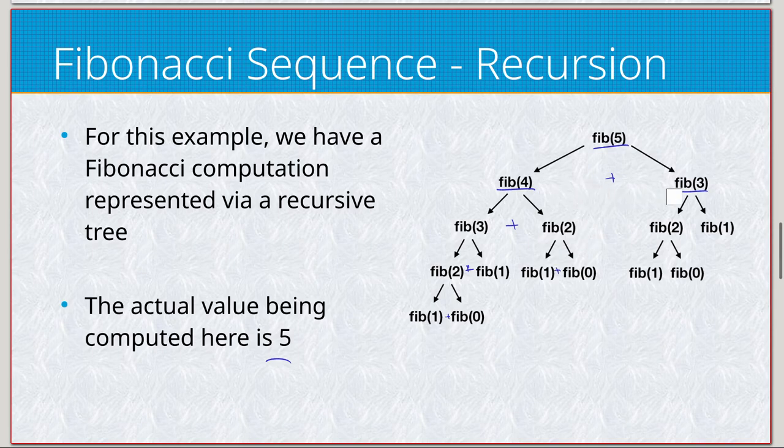But now we have to solve Fibonacci 2 and 3, which is 2 plus 1. And 2 is going to be 1 plus 0. 2 again here, 1 plus 0. Fibonacci 3, 2 plus 1. 2 is 1 plus 0. And our base cases, our breakout cases, are 1 and 0. They'll just return the actual values of 1 and 0.